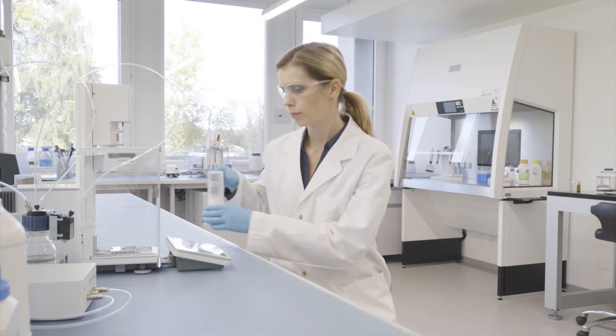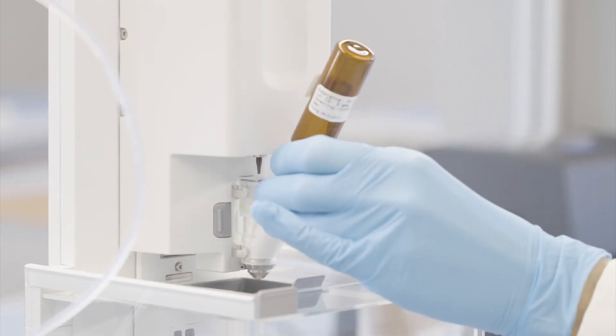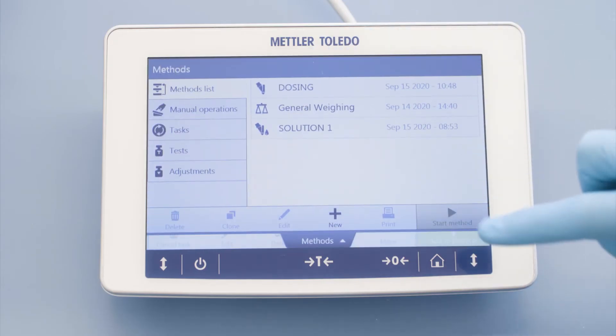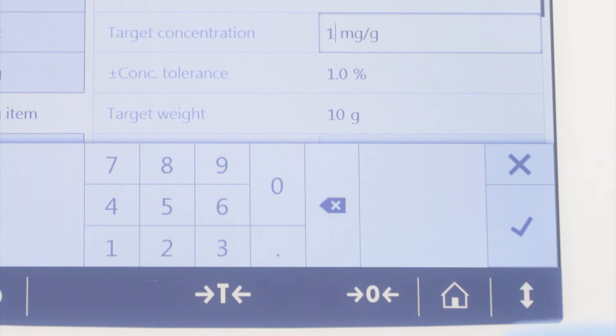It's efficiently done in just a few steps. Simply mount the dosing head with your powder reference material on the balance. Select the method directly on the display and define the target concentration and the target weight.